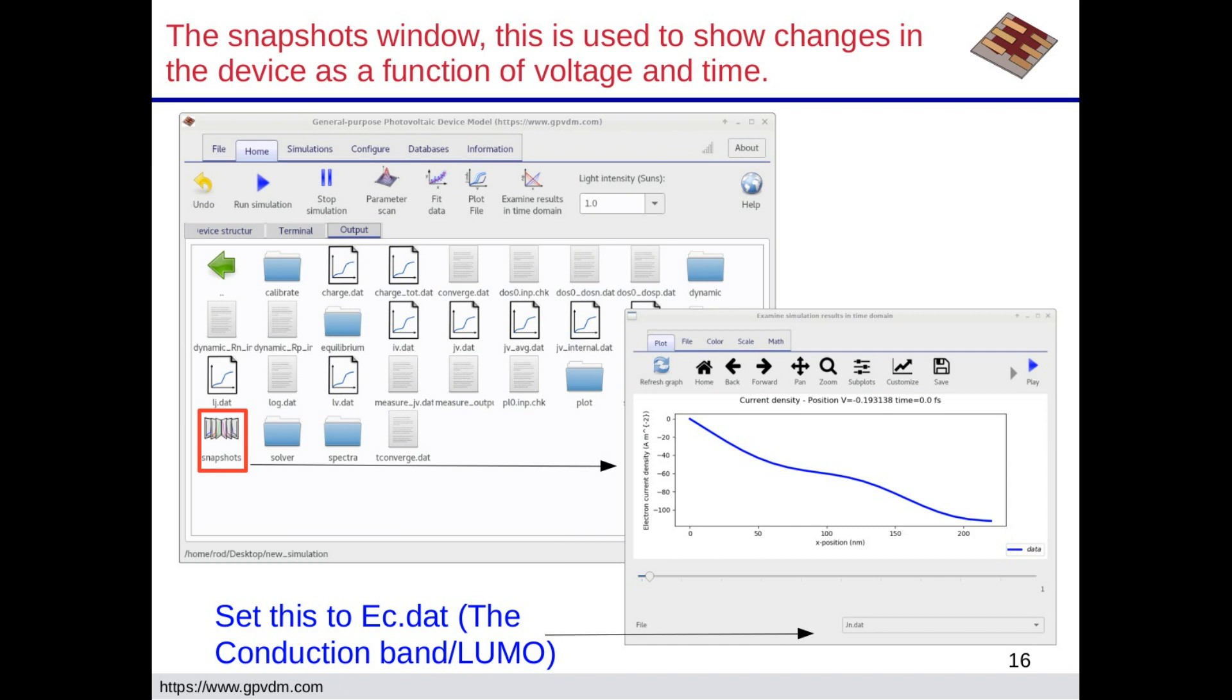And then if you look at the snapshots, if you double click on there's something called snapshots, if you double click on the snapshots thing, what it does is when after it's done a simulation step, so if it does like one at zero volts, 0.1, 0.2, 0.3, 0.4, it saves everything.